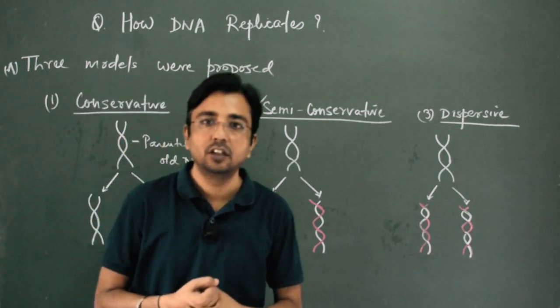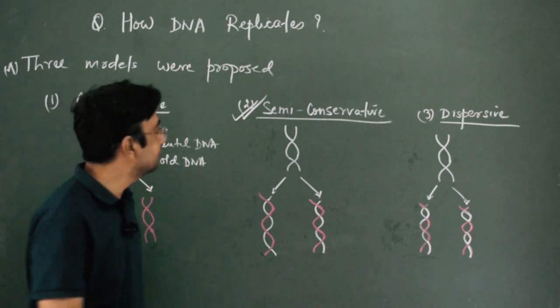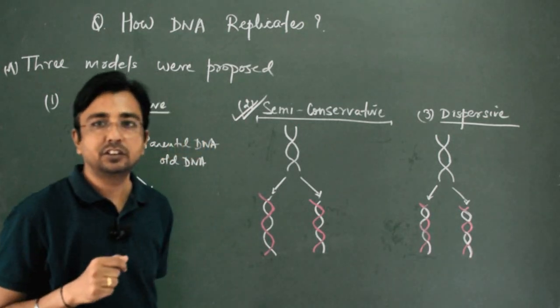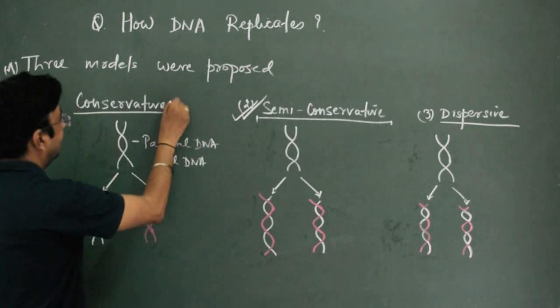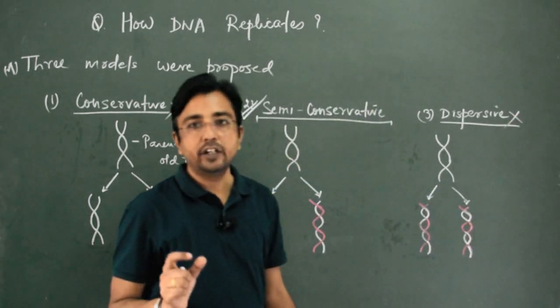In nature, we know that DNA replicates semi-conservatively. This model is the one that exists in nature. The conservative model and the dispersive model do not exist in nature.